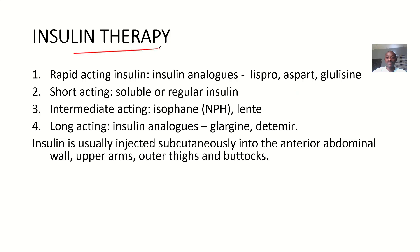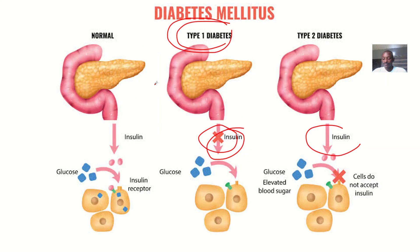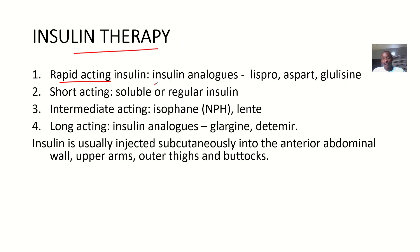For insulin therapy, we have rapid-acting insulin, which are insulin analogs. In Type 1 diabetes, there is no natural insulin formed or very little of it, so you want to replace it with man-made insulin. This insulin is made into different drugs, and those are the names of the drugs we will be talking about.